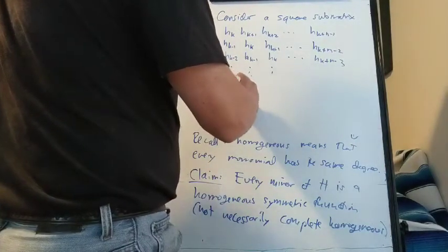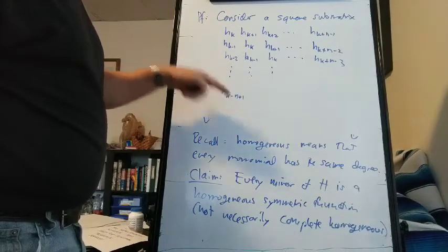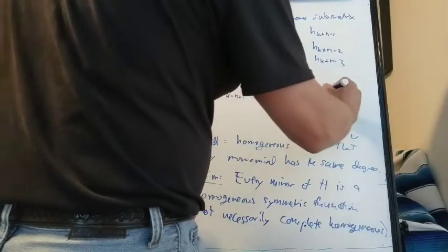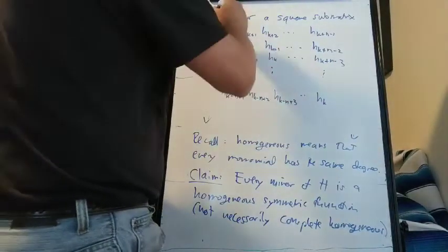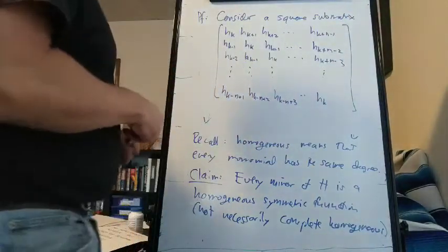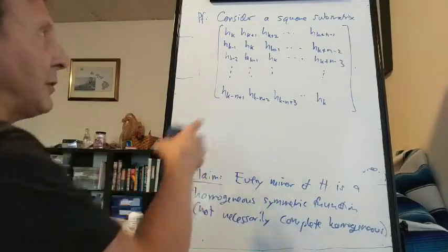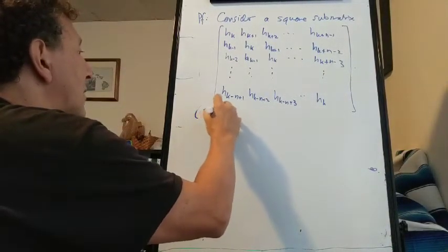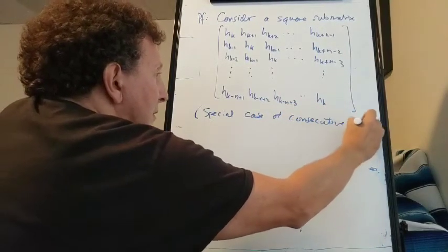So we're subtracting 0, 1, 2, ..., N-1, so H_{K-N+1} will be the last one. Then we'll have H_{K-N+2}, H_{K-N+3}, etc., and then this last one will be H_K on the diagonal. This is a special case of consecutive rows and columns.